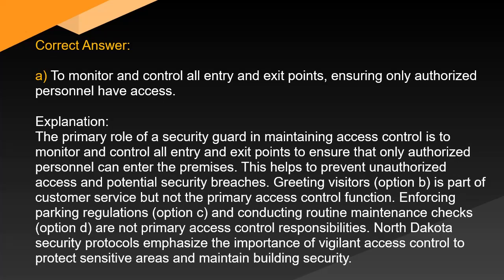Correct answer: A. To monitor and control all entry and exit points, ensuring only authorized personnel have access. The primary role of a security guard in maintaining access control is to monitor and control all entry and exit points to ensure that only authorized personnel can enter the premises. This helps to prevent unauthorized access and potential security breaches. Greeting visitors (option B) is part of customer service but not the primary access control function. Enforcing parking regulations (option C) and conducting routine maintenance checks (option D) are not primary access control responsibilities. North Dakota security protocols emphasize the importance of vigilant access control to protect sensitive areas and maintain building security.